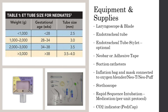You'll need a stylet if needed. You'll also need the adhesive type per your unit protocol, suction and suction catheters, an inflation bag and mask connected to oxygen — such as a Neopuff, a simple anesthesia bag, or a self-inflating bag. It's also helpful to have a stethoscope. You may consider rapid sequence intubation per your unit protocol, and you'll also need a CO2 detector or PD cap. Remember, purple is poor and gold is golden.